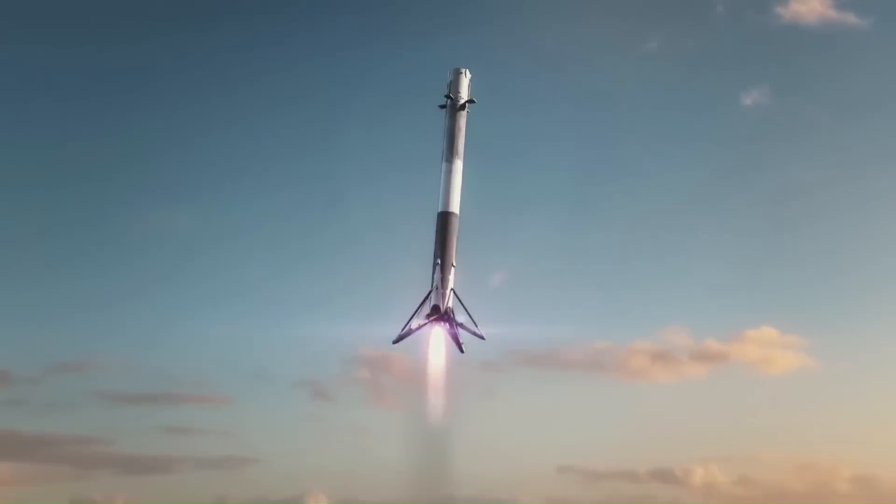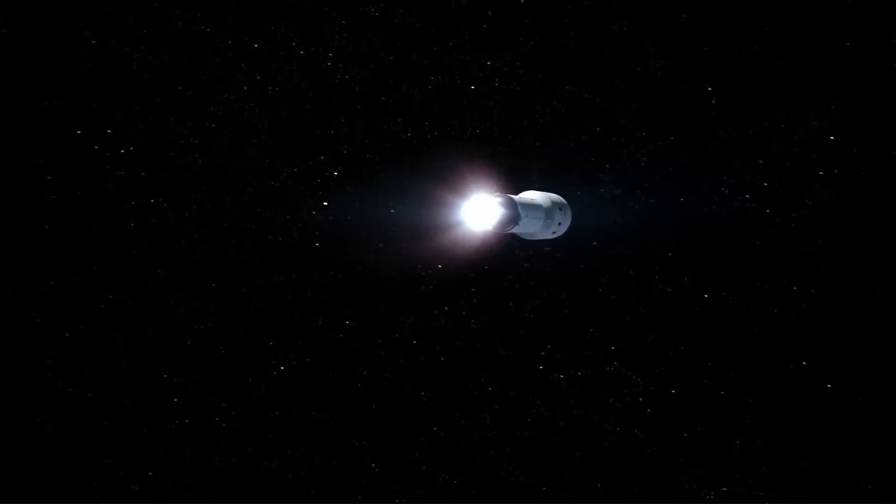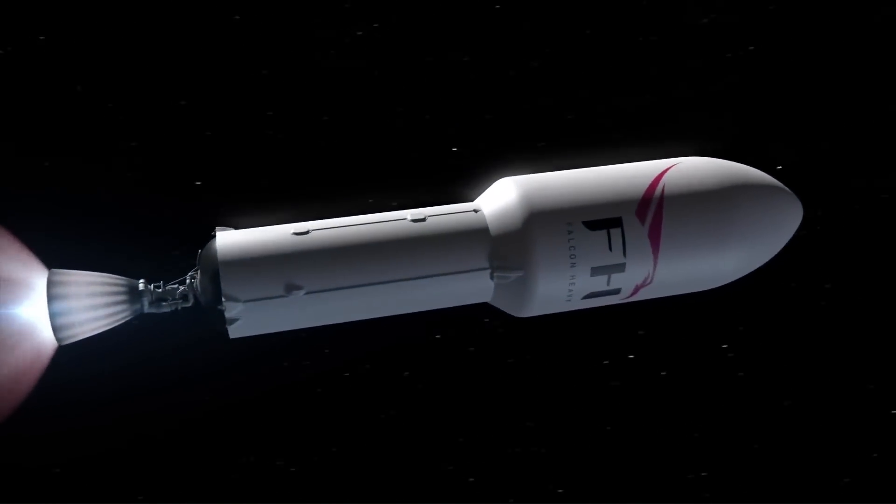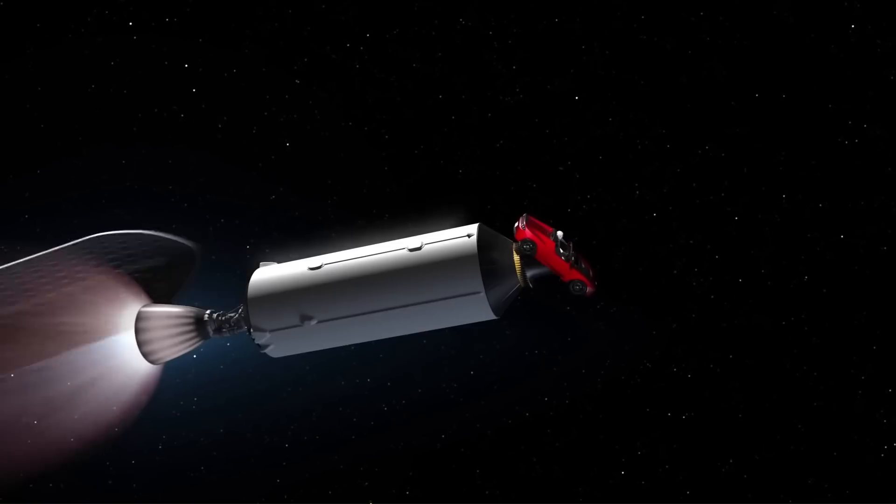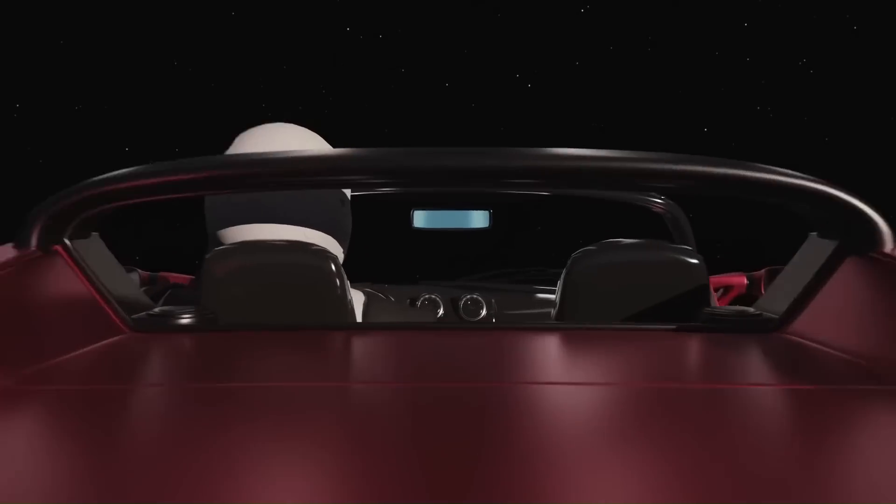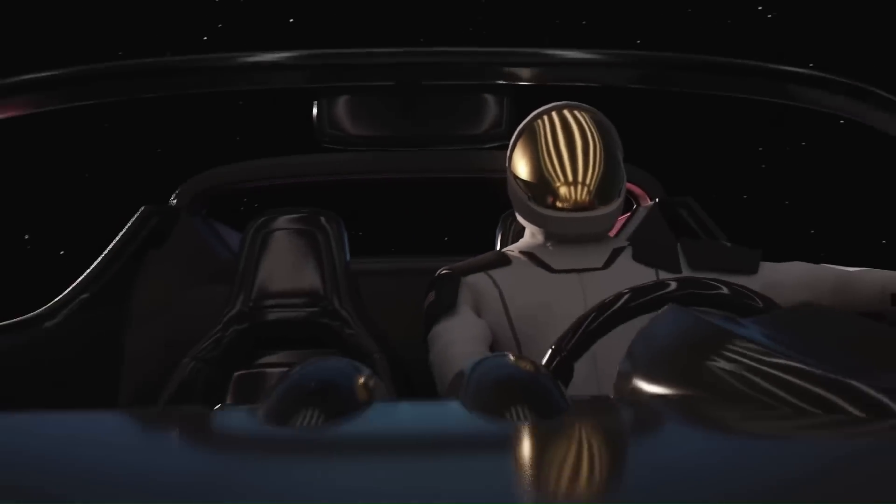The final stage of the launch of the SpaceX Falcon Heavy sees the spacecraft's top release the Tesla Roadster, where it will travel at a max velocity of 11 kilometers per second, 7 miles per second, until orbiting Mars.